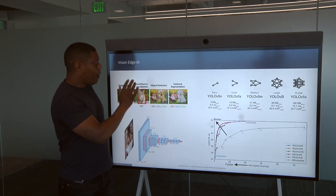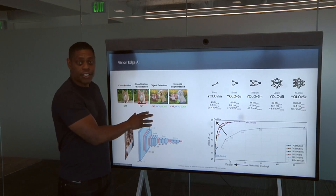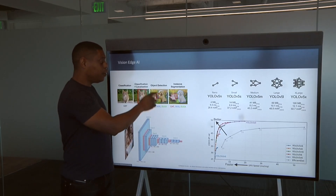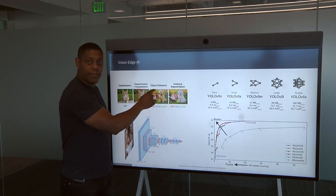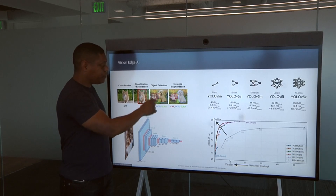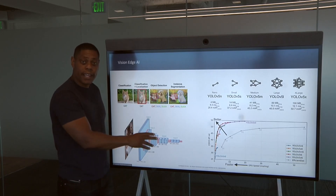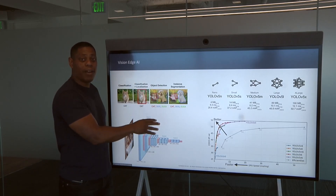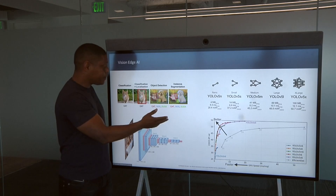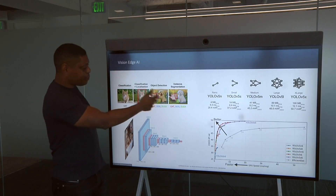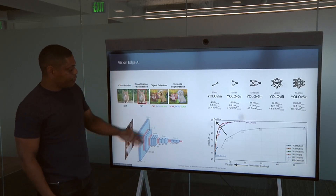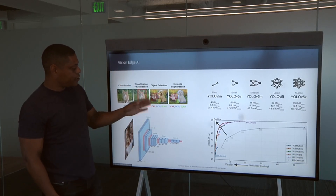The problem of object detection is twofold. First, you need to be able to locate a specific object of interest within a visual scene. Second, you need to properly classify what that object is. In this particular case, you've got three objects of interest: cat, dog, duck.